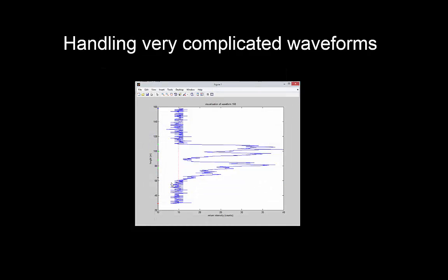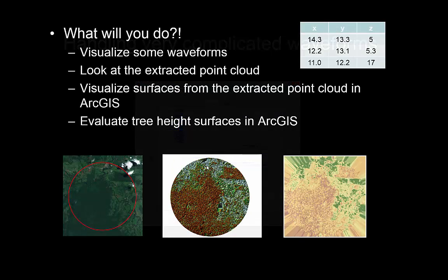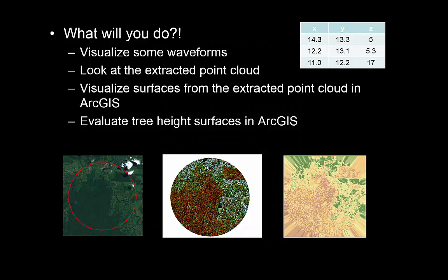Some of the waveforms are going to be pretty complicated. If you've got a lot of different layers within the 25-meter footprint, you might get something like this complex example also from our dataset. Then you have to decide how many peaks you actually want to try and identify. That's what you're going to do.